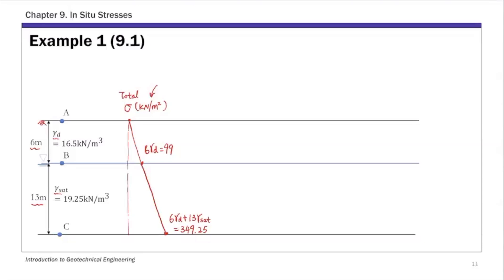Next, pore pressure, in units of kN/m². I'll add a vertical zero pore pressure line. Above the water table, in the dry soil layer, there is no pore pressure, so it is zero throughout the first layer. Adding zero at the surface and zero at the bottom of the dry soil layer — because it is above the water table, pore water pressure is zero.